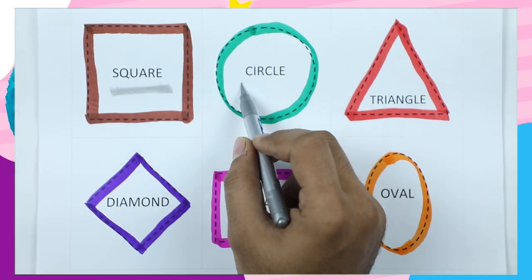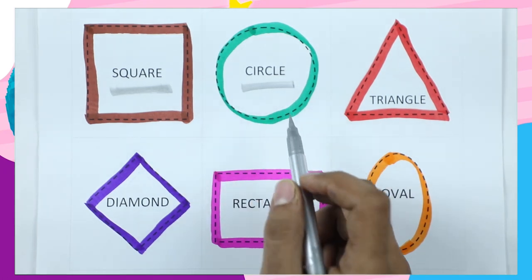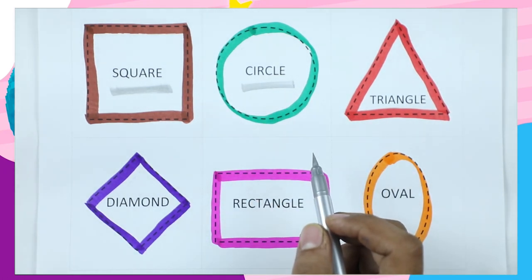Circle. C-I-R-C-L-E. It's a circle with green color.